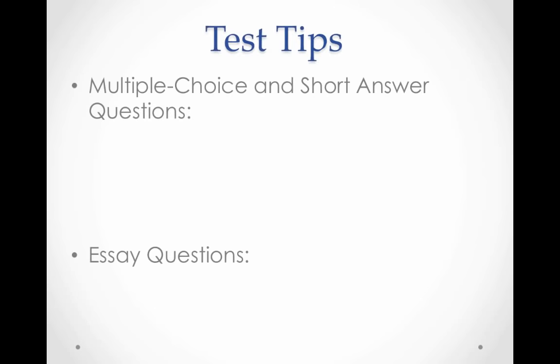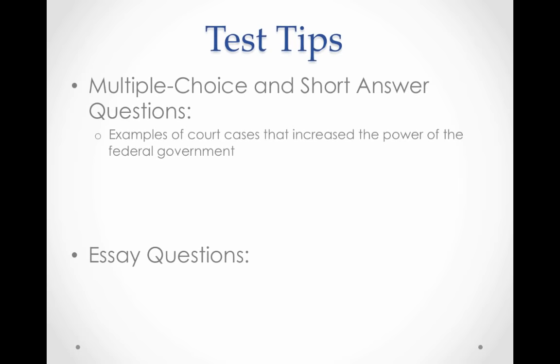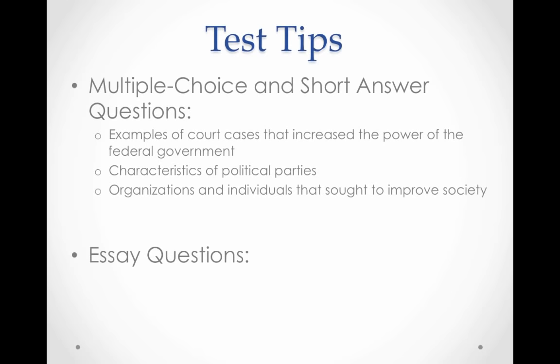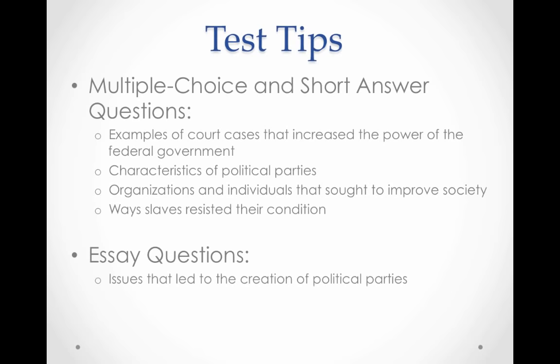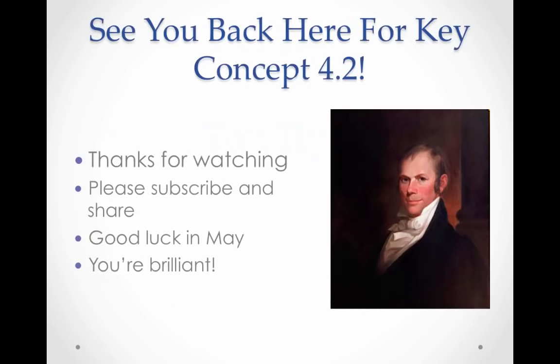For test tips on multiple choice and short answer: be able to identify and explain core Supreme Court cases that increased the power of the federal government, characteristics of political parties, and organizations and individuals that sought to improve society, as well as ways that slaves resisted their conditions. For essay questions: be able to describe issues that led to the creation of political parties and the impact of the Second Great Awakening on American society. Thanks for watching — see you for Key Concept 4.2.